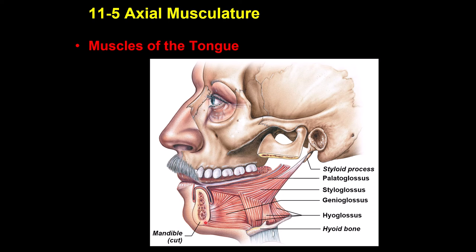The tongue has four muscles. Genioglossus causes protrusion and depression of the tongue. Hyoglossus causes retraction and depression. Styloglossus causes retraction and elevation. Palatoglossus causes elevation of the tongue. There is also the geniohyoid, which is a muscle of the floor of the mouth.